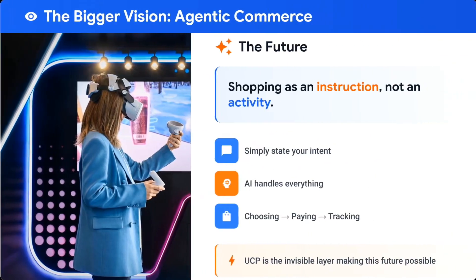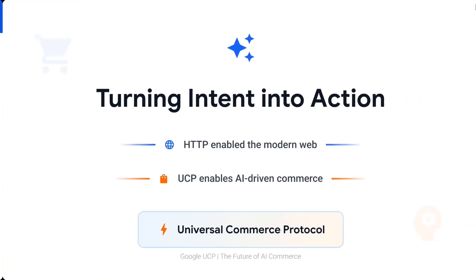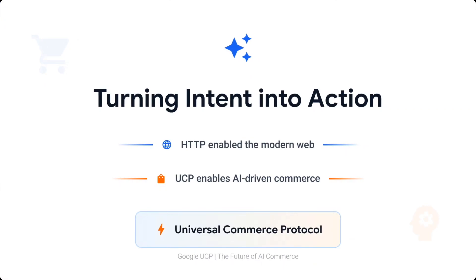The bigger vision is agentic e-commerce — shopping as an instruction, not an activity. Simply state your intent and AI handles everything: choosing, paying, and tracking. Turning intent into action — just as HTTP enabled the modern web, UCP enables AI-driven e-commerce. I hope you try out Google UCP; it's very interesting to read. Let me know in the comments how you feel about it. Thank you so much.